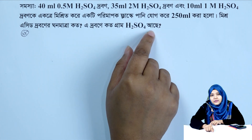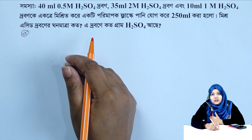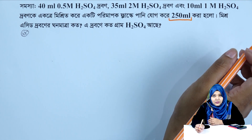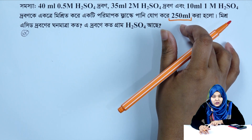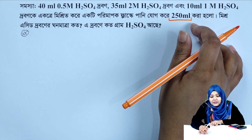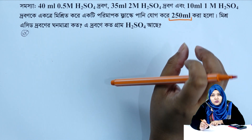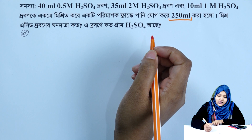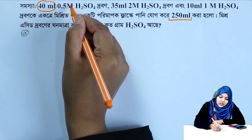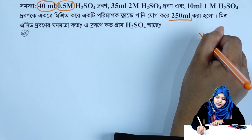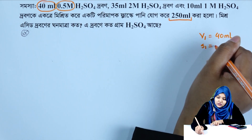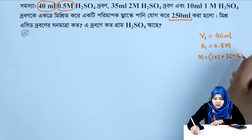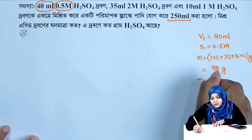Each acid drop contains sulfuric acid. I'm going to show you how to work with 3 grams of sulfuric acid drop. The molar mass of sulfuric acid: 1 into 2 plus 32 plus 16 into 4 equals 98 grams per mole. w1 equals 40.